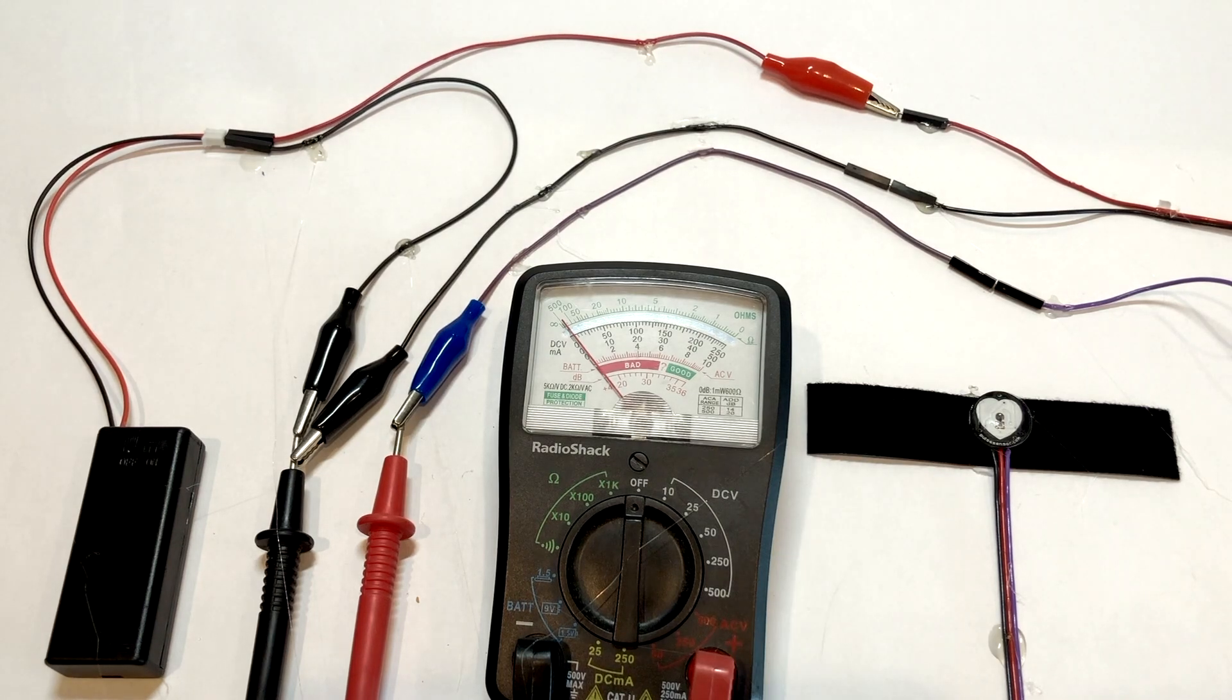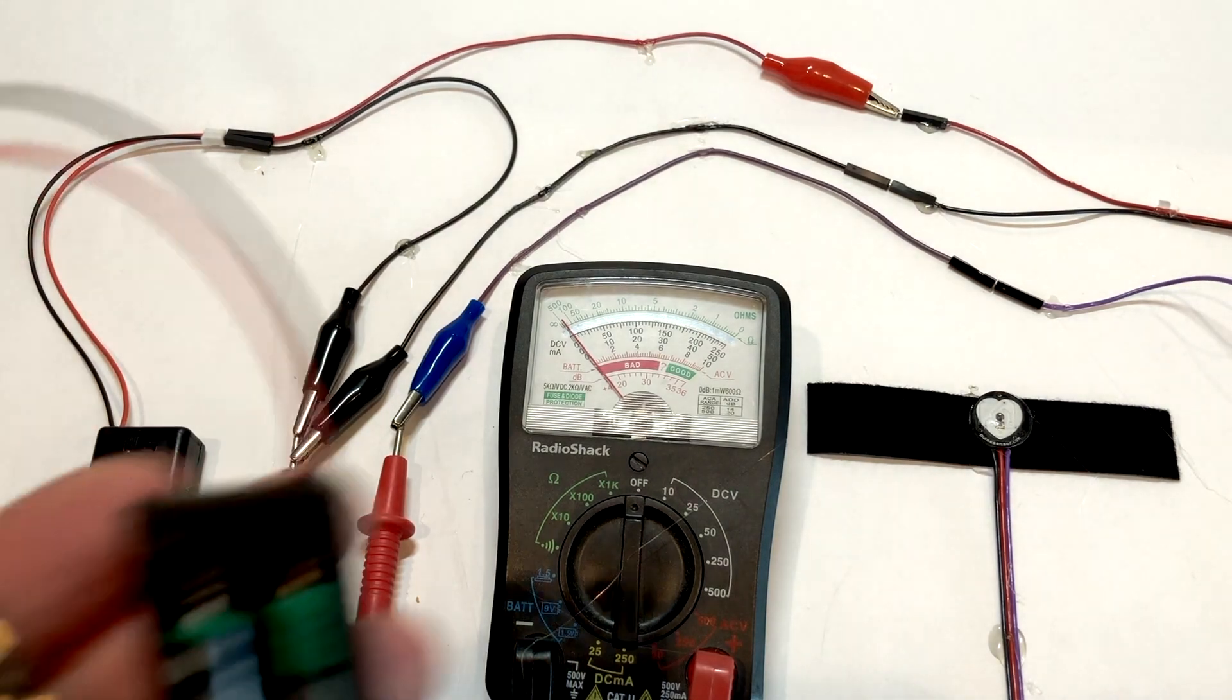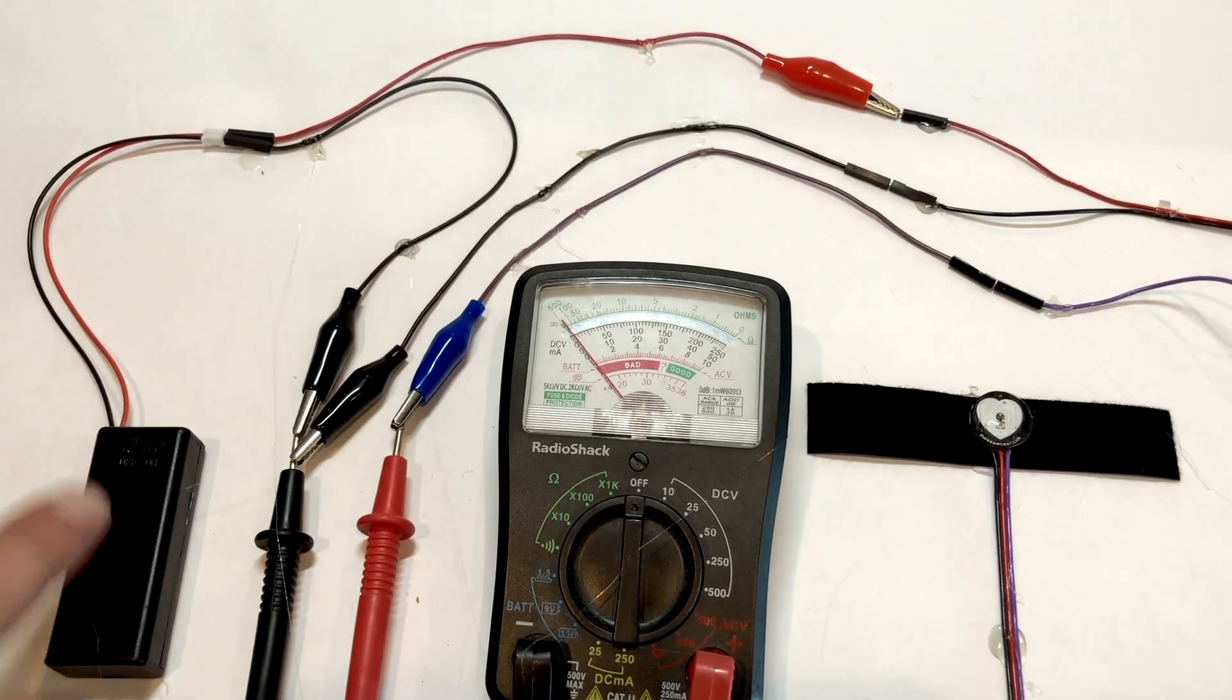To power the Pulse Sensor, I'm simply using two AAA batteries. In fact, the same battery pack that powers my microbit.